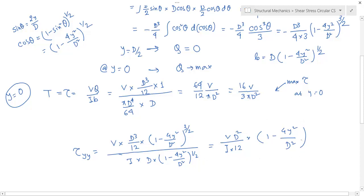So if you put the value of y equals 0, then you get τ_max. And if y equals D/2, you get τ_min, that is equals to 0.